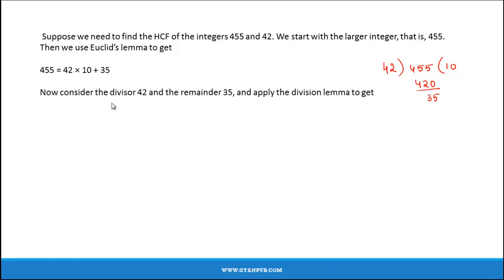Now consider the divisor 42 and the remainder 35, and apply the division lemma to the two. So now we divide the new divisor 42 with the remainder 35. So 35 times 1 gives 35, and the remainder is 7. So 42 can be written as 35 times 1 plus 7.